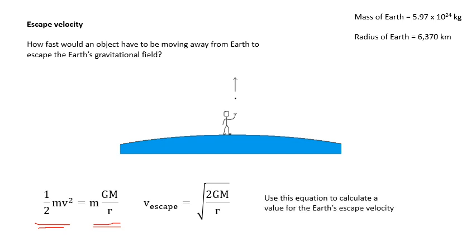Using the given data, you can work out the Earth's escape velocity. If you don't know it, try to calculate it — the answer is about 11 kilometres per second.